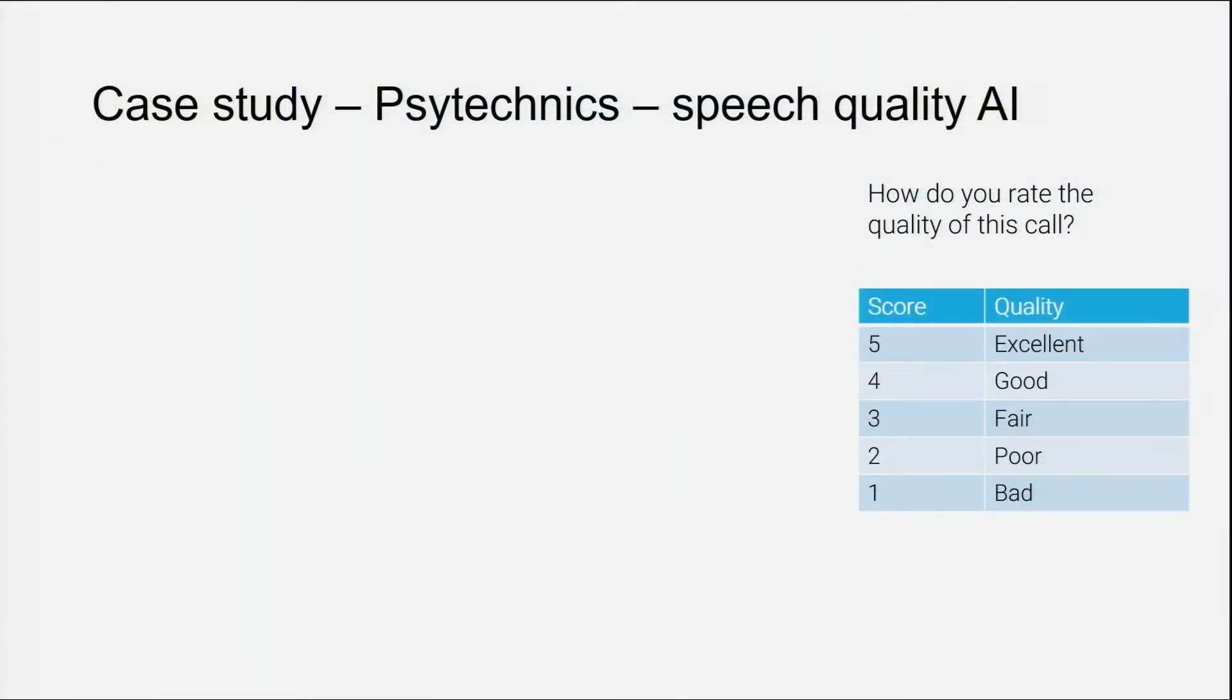I'm going to talk about my first AI startup. The company was called PsyTechnics. We solved a really simple but difficult problem. How do you rate the quality of a phone call? It's the 1990s. Mobile and VoIP are going to transform the way that the world communicates. But if they're going to do that, we need to solve some really hard problems that exist today about quality.